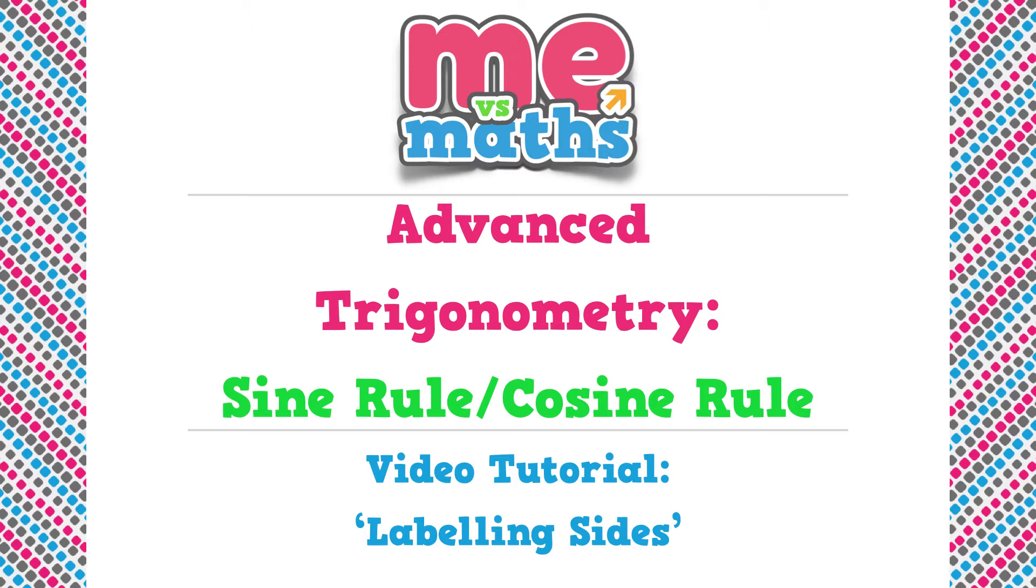In this series we'll be looking at two rules, the sine rule and the cosine rule, which can be used to find missing sides and angles in any triangle. It does not have to be right angled.